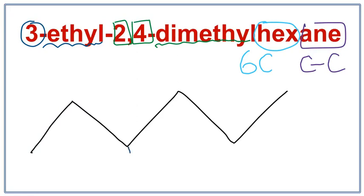On the third carbon, ethyl. Now on the second carbon, we have a methyl and on the fourth carbon, we have a methyl.